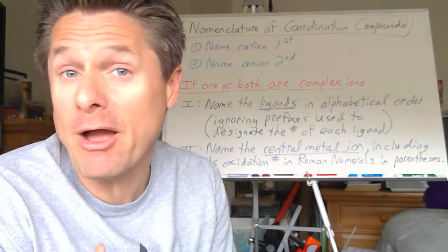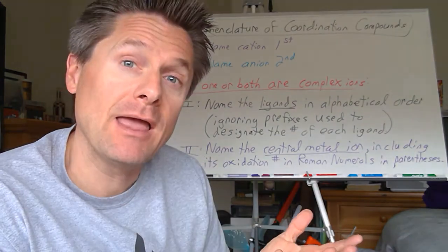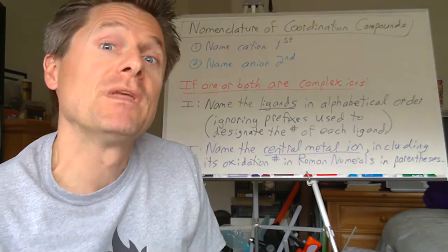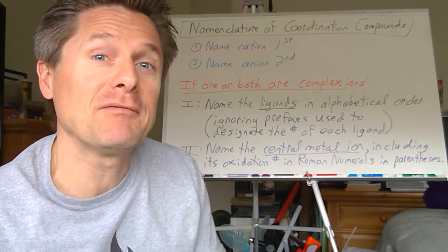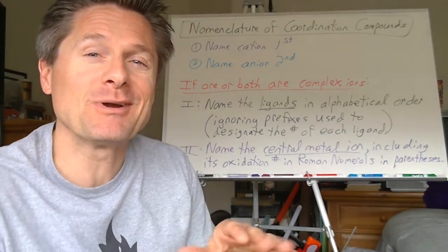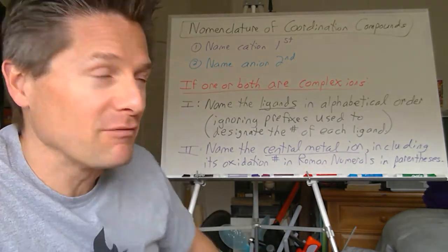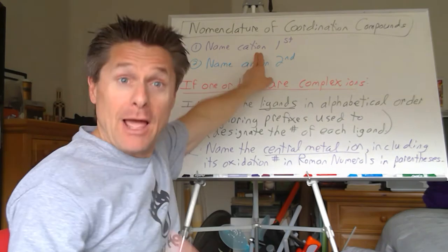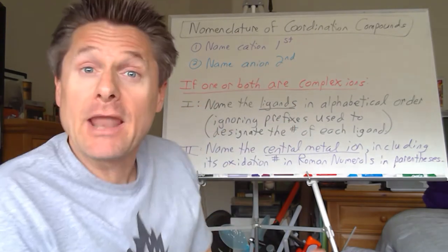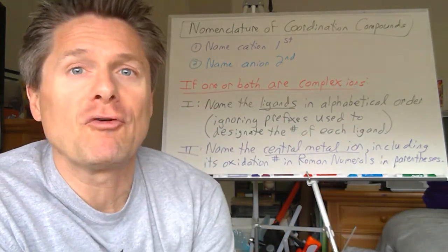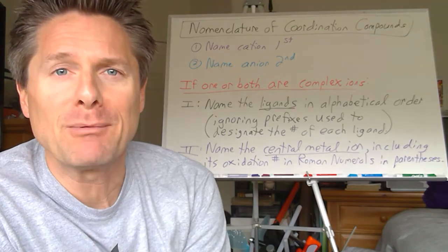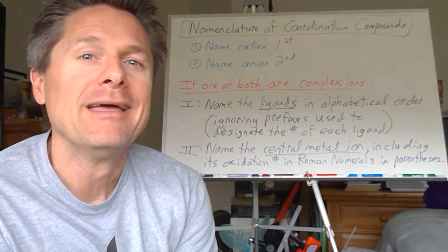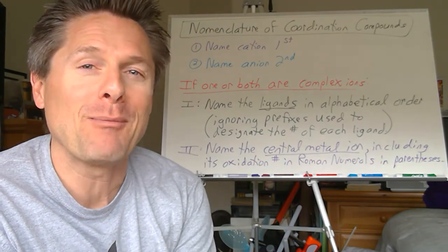That complex ion could be the cation or could be the anion. You could have both — those get real crazy. The naming rules are a little different if they're cations versus anions, so we're going to go through the details later. If we've got a coordination compound, name the cation first and the anion second, just like we learned in first semester. But we're not going to have your friendly neighborhood sodium ion and chloride ion — one or both of these is going to be a complex ion.